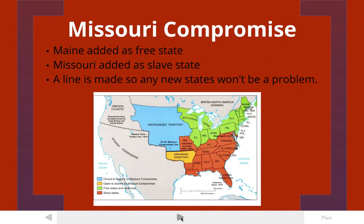The first time this became an issue was in 1820, when newly settled territories from the Louisiana Purchase wanted to become states — the main one being Missouri. If Missouri was added as a free state, the free states would have more power. The solution was called the Missouri Compromise. The United States decided to add Maine as a free state and Missouri as a slave state, keeping the balance of power equal. They also drew a Missouri Compromise Line stating that anything north of that line would be a free state, and anything south would be a slave state, so future additions wouldn't be a problem.